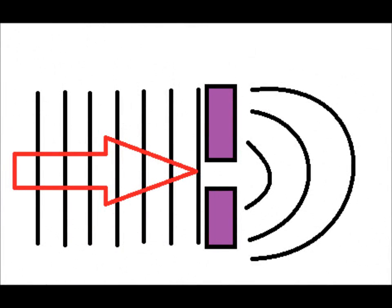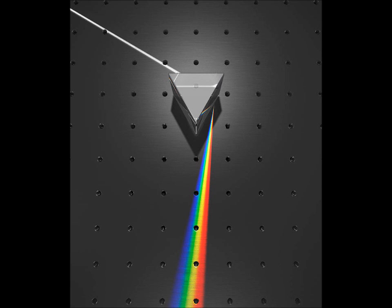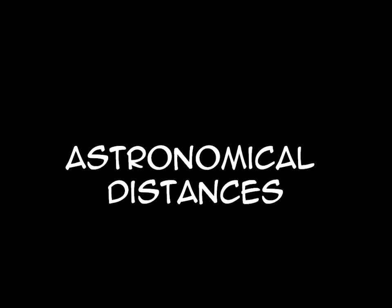Diffraction is when waves spread out at the edges when they pass through a gap. It happens because the gap acts as a secondary wave source. The narrower the gap or the longer the wavelength, the more the wave diffracts. The diameter of the objective lens equals the aperture. The bigger the aperture, the more radiation you can get into the telescope and the better the image formed. Diffraction can cause the image to blur when entering a telescope. A diffraction grating makes a spectrum as the narrower slits diffract light, and these spectra are used to analyse light from stars.